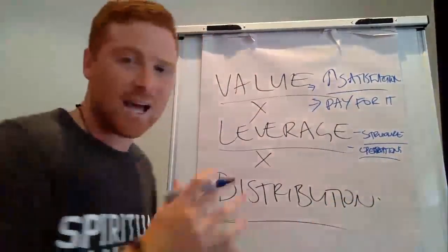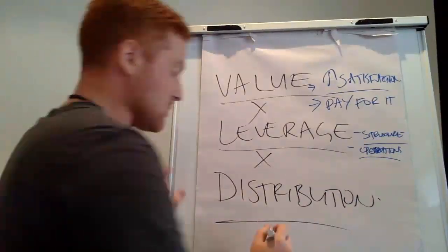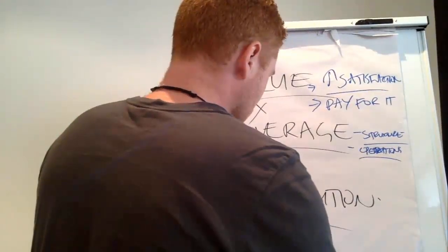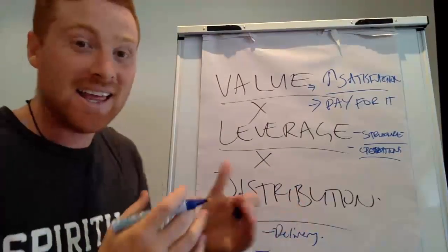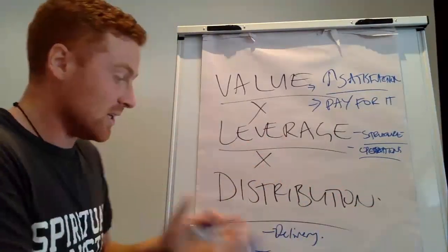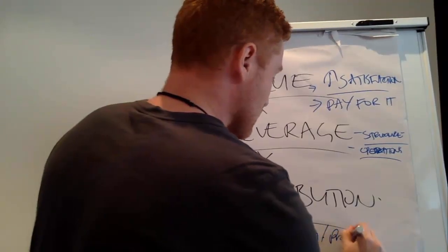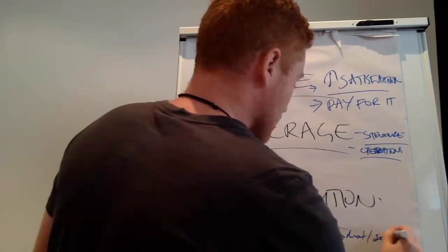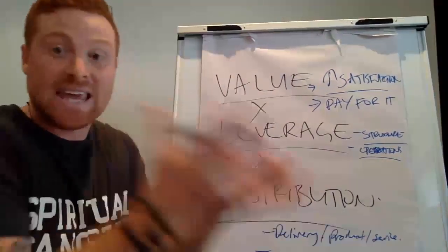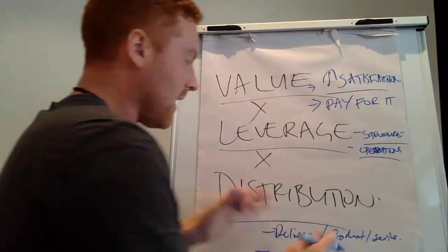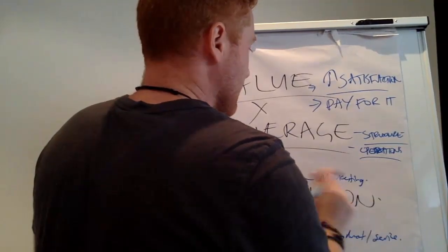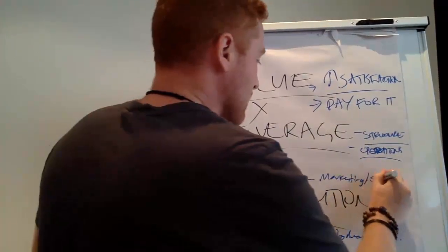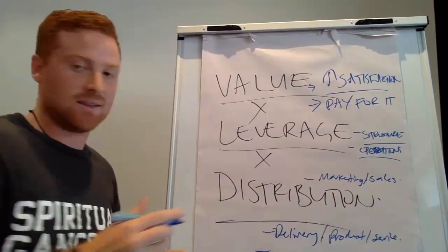The next thing is distribution. So distribution means how do we get it to the people? So the first one is delivery. How does it actually deliver to them? How do they actually get it? How do they get the product? Delivery slash product distribution or service distribution. That's the first thing. It's actually how do they get the product. And then the other part of distribution is actually the marketing. Do you have the marketing and the sales? So there's actually marketing and sales to actually get the eyeballs to get the traffic.